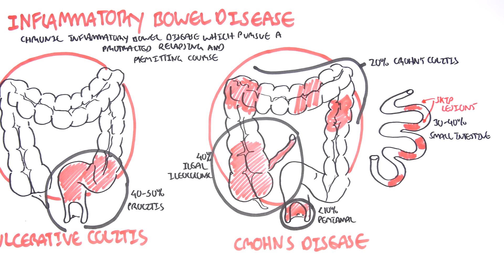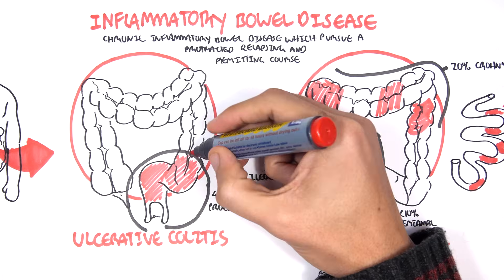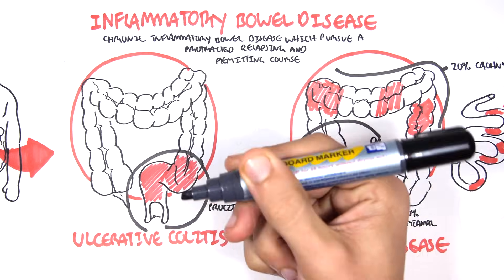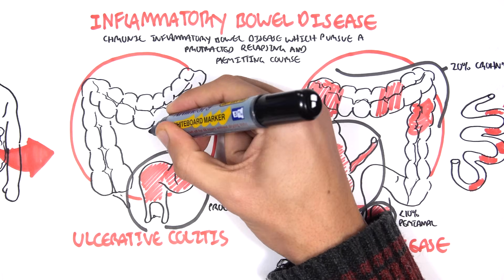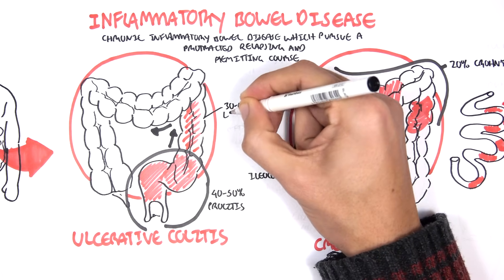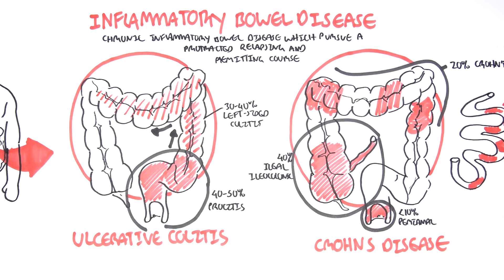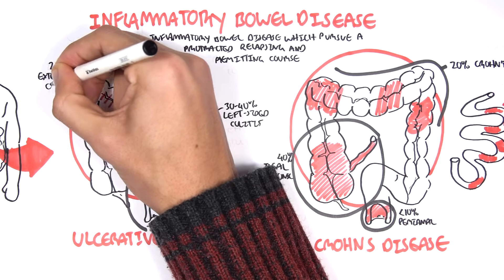A typical characteristic of Crohn's disease is the skip lesions. Going back to ulcerative colitis, the main area affected is the rectal sigmoid area — proctitis. A characteristic of ulcerative colitis is that the inflammation can spread proximally, from the rectal sigmoid area up the descending colon. 30% to 40% of ulcerative colitis cases have this, termed left-sided colitis. If the inflammation spreads far enough to reach the transverse colon, this is known as extensive colitis.